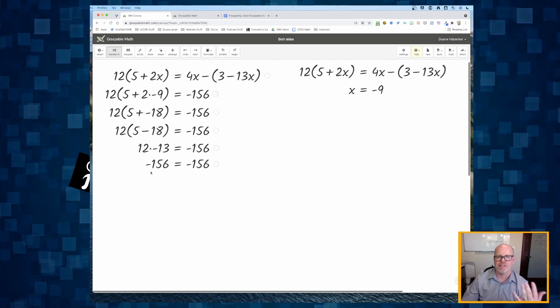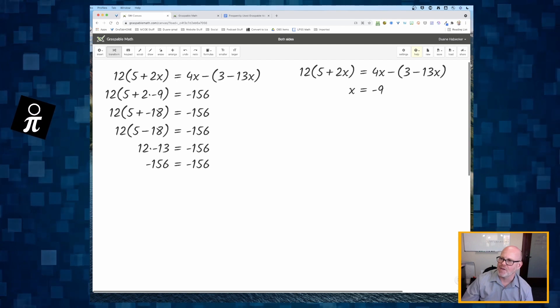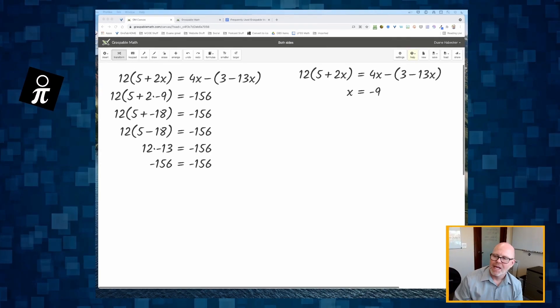Negative 156 is equal to negative 156, which means that negative 9 was correct. And that's it, folks. Graspable Math,